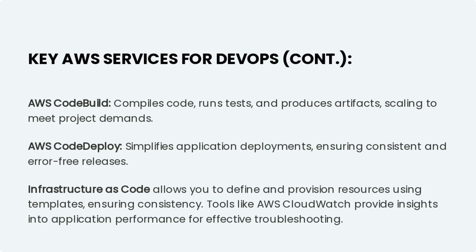Let's explore more key AWS services for DevOps. AWS CodeBuild compiles code, runs tests, and produces artifacts, scaling to meet project demands. AWS CodeDeploy simplifies application deployments, ensuring consistent and error-free releases. Infrastructure as code allows you to define and provision resources using templates, ensuring consistency.